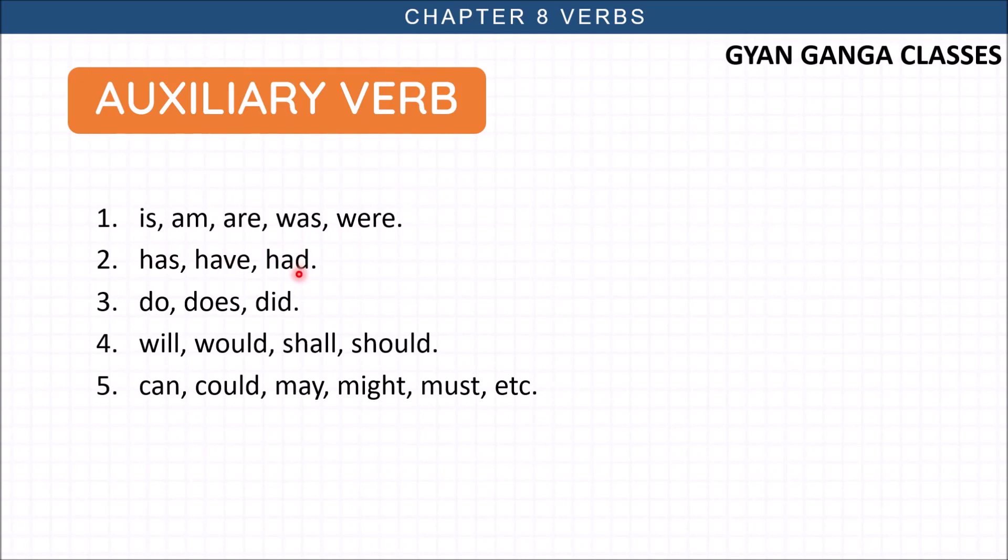Do, does, did - do with I, we, they, you. Does with he, she, it or any name. Did for everyone in the past tense. Will, would, shall, should - will is present tense, would is past tense. Shall is present tense and should is past tense and used in some special cases too. Can, could, may, might, must - these are all types of verbs that are our auxiliary or helping verbs.